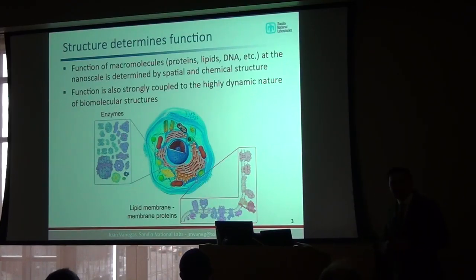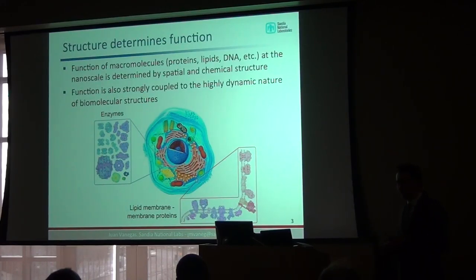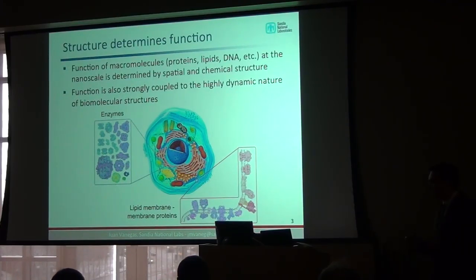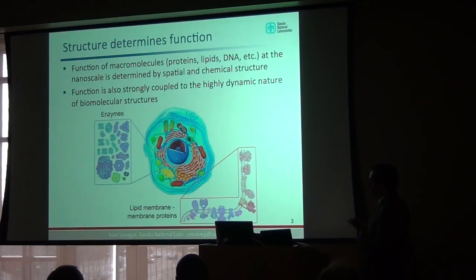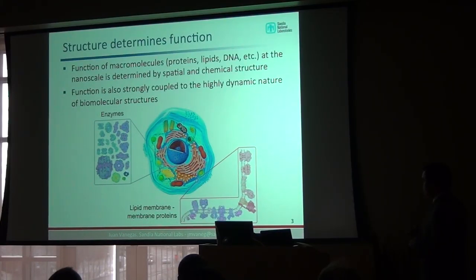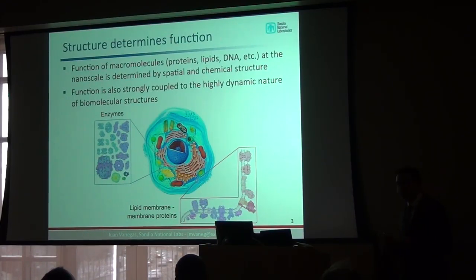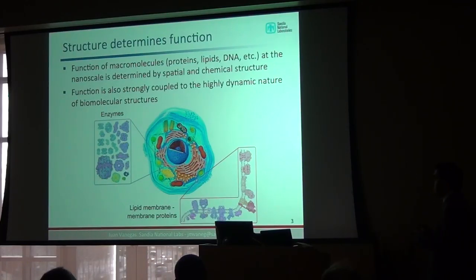One of the pillars in biology at the molecular level is the idea that structure determines function. If we look closely at our cells, they're made of many different molecular machines that carry out all kinds of different activities. We have enzymes that catalyze reactions, and membranes which compartmentalize different processes. These membranes are not just static barriers — they also contain membrane proteins that carry out many different functions. The structure, both spatial and chemical — the way atoms are connected — makes a big difference in how these machines carry out their functions.